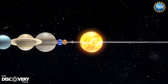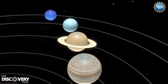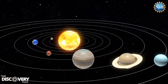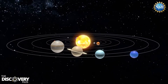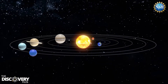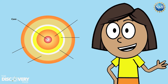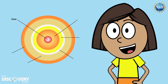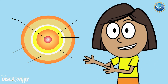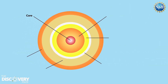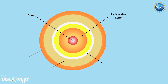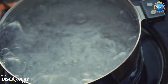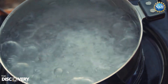The Sun is the centre of our solar system and its gravity holds that solar system together. The energy of the Sun is generated at its core. The next layer is called the radioactive zone and then the convection zone, where hot air rises and cold air sinks like water boiling in a pot.